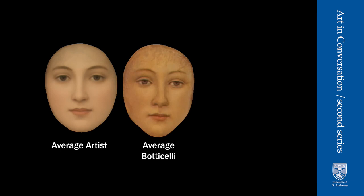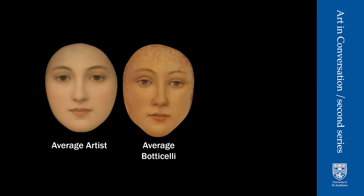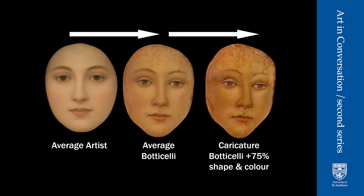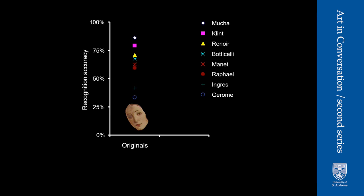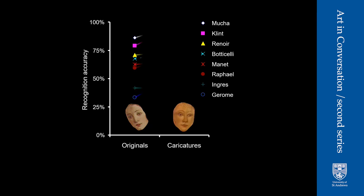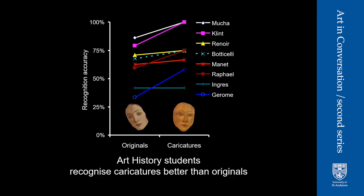What I really want to talk about is exaggeration. If we take the average artist and compare it to Botticelli, we can find those differences and exaggerate the way Botticelli painted. The result is a caricature of Botticelli — 75% exaggeration — so the eyelids are more droopy, the chin is more triangular, the nose is longer. In an experiment with art historians in St. Andrews, I showed them original paintings with background removed and asked which artist it was. The art historians were pretty good at identifying the cutout images, but when we showed them caricatures, recognition performance improved. We can see a benefit to visual recognition from exaggerations.